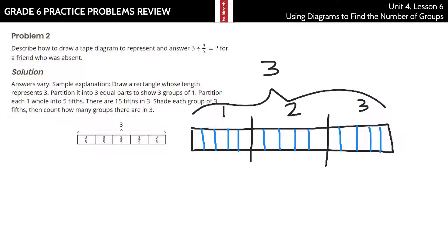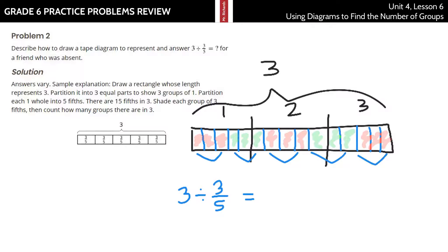Now, I want to do 3 divided by 3/5, so I'm looking for how many groups of 3/5 I can get out of 3. Well, 1, 2, 3 — there's 3/5. 1, 2, 3 — there's another 3/5. 1, 2, 3 — another 3/5. 1, 2, 3 — another 3/5. And lastly, 1, 2, 3 — another 3/5. How many groups? 1, 2, 3, 4, 5. There are 5 groups of 3/5, so 3 divided by 3/5 equals 5.